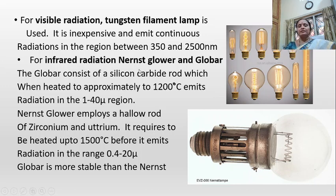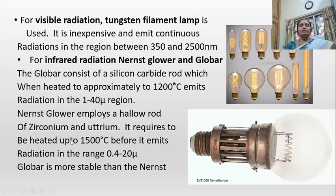For infrared radiation, the Nernst glower and globar are used. The globar consists of a silicon carbide rod which, when heated to approximately 1200 degrees Celsius, emits radiation in the 1 to 40 micron region. The Nernst glower employs a hollow rod of zirconium and yttrium, requiring heating up to 1500 degrees Celsius before emitting radiation in the 0.5 to 20 micron region. Globar is more stable than Nernst.